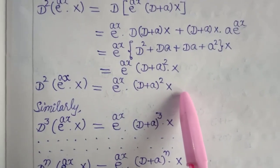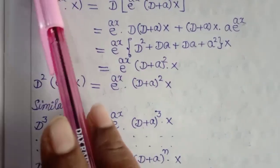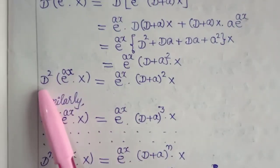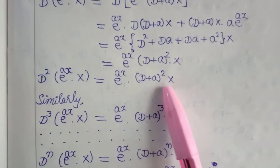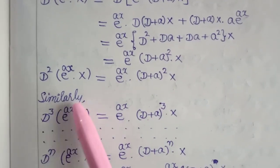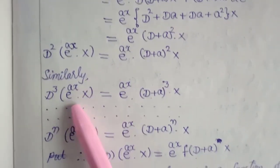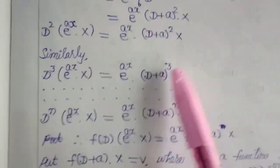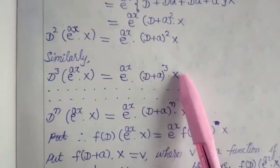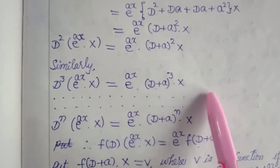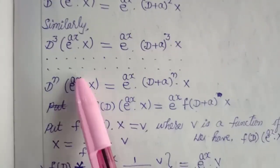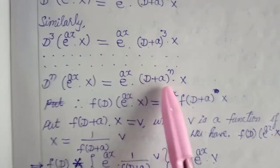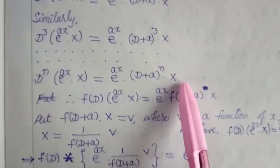What we observe is: for the first derivative, it is (D plus a) to the power 1; for the second derivative, it is (D plus a) whole squared. Similarly, D cubed of e^(ax) into χ equals e^(ax) into (D plus a) whole cubed into χ. Generalizing for the nth term: D^n into e^(ax) into χ equals e^(ax) into (D plus a) whole to the power n into χ.